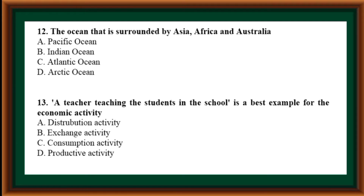The ocean that is surrounded by Asia, Africa and Australia is: options are Pacific Ocean, Indian Ocean, Atlantic Ocean, Arctic Ocean. Correct answer: Indian Ocean.